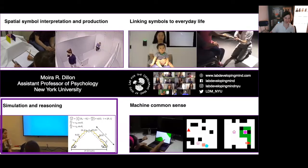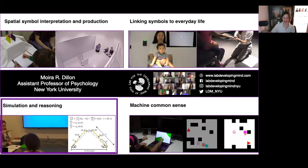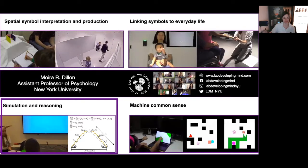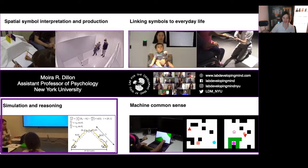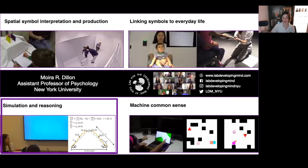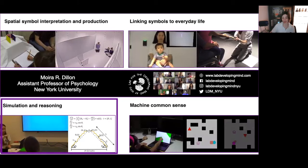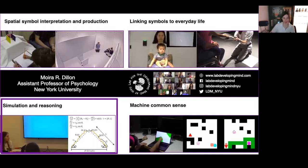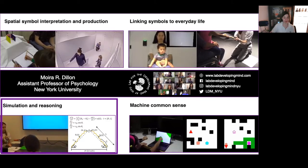A third line of work in the lab explores what goes on in our heads when we're answering difficult problems about the general properties of the spatial world. Often these are the kinds of problems that are captured in our formal systems of geometry and are taught in school. Do we try to remember rules that we've learned to solve these problems, for example, or do we use something like mental imagery?